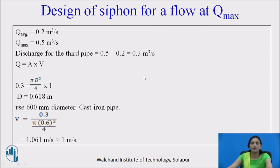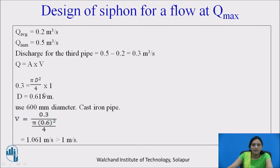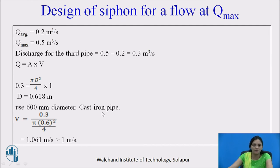Now design the siphon for flow at maximum discharge. Maximum discharge is 0.5 m³/s; the first two barrels handle 0.2 m³/s, so the third barrel handles 0.5 − 0.2 = 0.3 m³/s. Using self-cleansing velocity of 1 m/s, calculate diameter for 0.3 m³/s: diameter = 0.618 m. Consider 600 mm diameter with the same cast iron pipe material. Velocity for 600 mm diameter and discharge 0.3 m³/s = 1.061 m/s, greater than self-cleansing velocity. Hence it is okay.